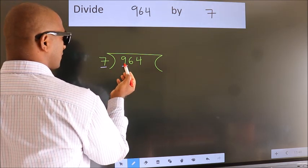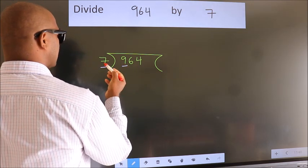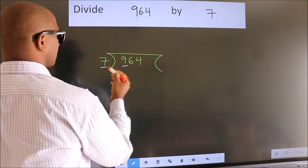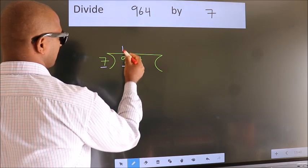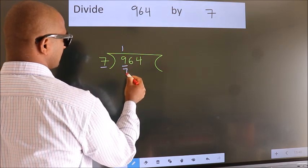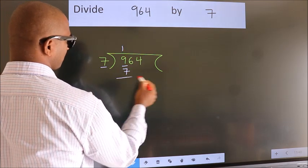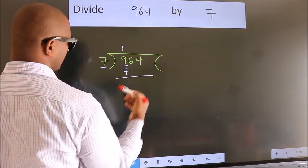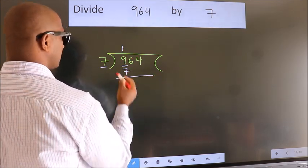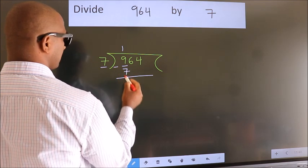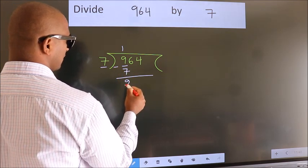A number close to 9 in the 7 times table is 7 once, which is 7. Now we should subtract. We get 2.